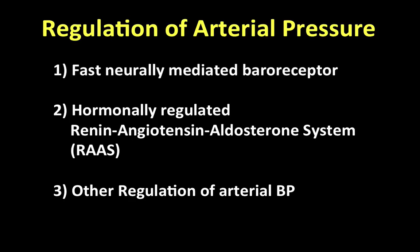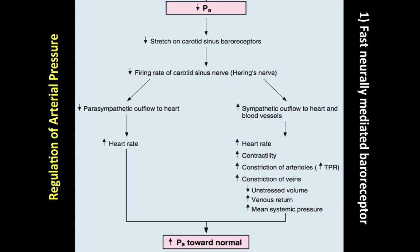Let's start talking about the fast neural baroreceptors. In this example, I'll illustrate low blood pressure, which can be due to many things. Let's imagine a patient with an acute hemorrhage. When this patient has acute hemorrhage, the body will rapidly activate the baroreceptors to raise blood pressure. Our main goal is to raise blood pressure because low blood pressure means insufficient blood to the brain and organs, causing ischemia, especially in the kidneys.